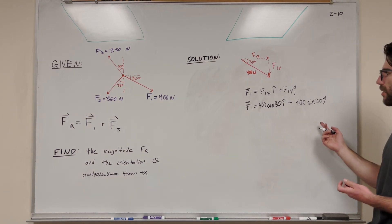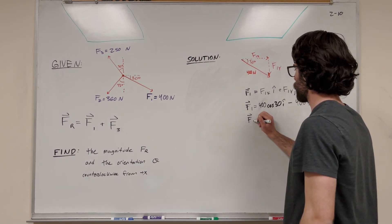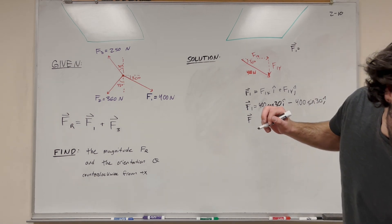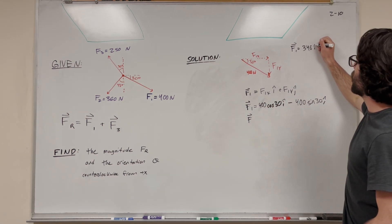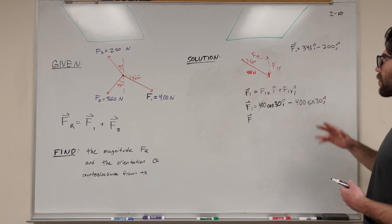This is our equation for F1. Writing it out: this gives us 346i minus 200j. So this is our F1 vector.